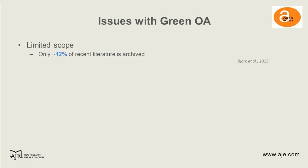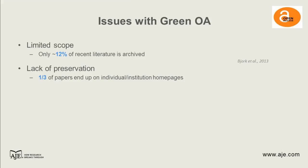Green open access sounds good in theory — the publishers work as they've always operated, the same journals, the same authors. But what are the issues with it? What has led to experiments like gold open access, where you're taking a much stronger approach? One issue is limited scope: a study from a few years ago found that only about 12 percent of recent literature is actually archived somewhere else, which is a pretty small number.